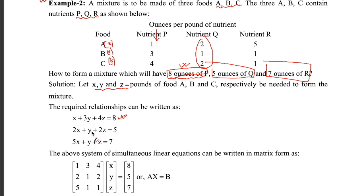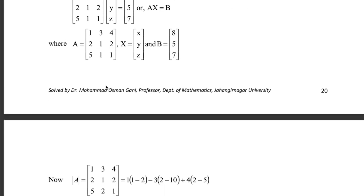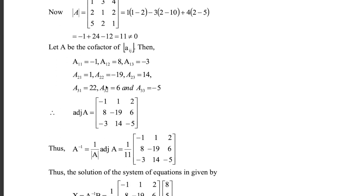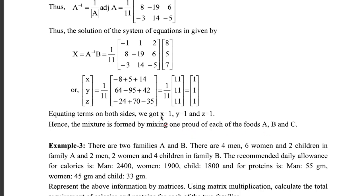The second equation is 2x plus y plus 2z equals 5 ounces of Q, which is equal to five. Similarly, using the third column we can create the third equation. We can then solve this linear system by the matrix method to get x, y, z, as done in my previous lecture. The result will be x=1, y=1, z=1.